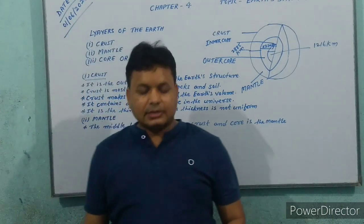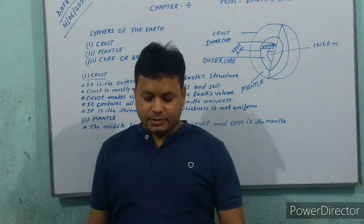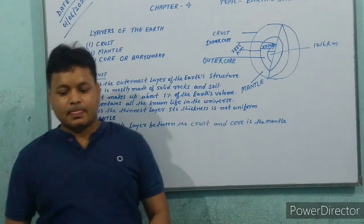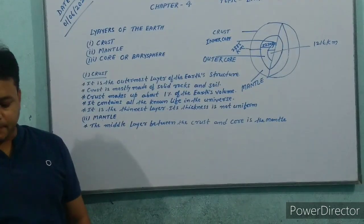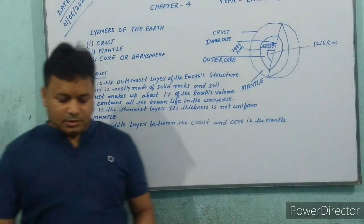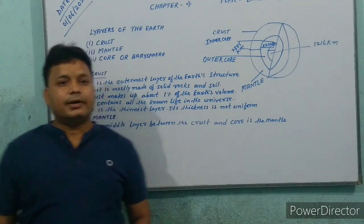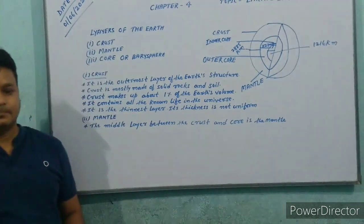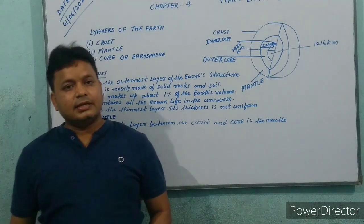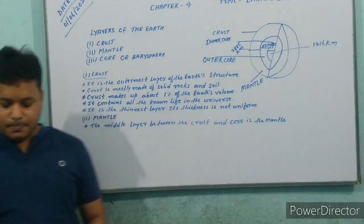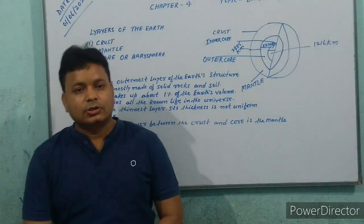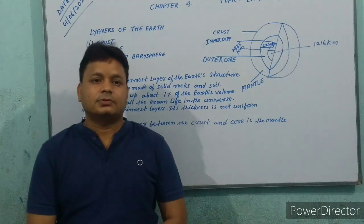Continental crust has an average thickness of about 50 km. The thickness is more under mountain ranges and less under plains. For example, the thickness under the Himalayas is about 75 km.